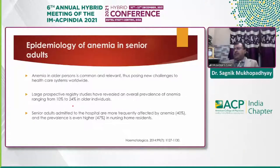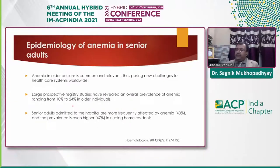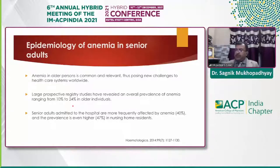The epidemiology of anemia in senior adults is like this: anemia in older persons is common and relevant, causing new challenges for the healthcare system. Many primary care physicians encounter these types of anemia worldwide. Larger prospective registry studies like the Calgary registry have revealed an overall prevalence of anemia ranging from 10 to 24 percent in older individuals. Senior adults admitted to the hospital are more frequently affected by anemia, around 40 percent, and the prevalence is even higher at 47 percent in nursing home residents.